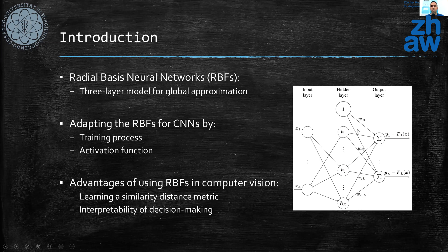Radial basis functions can also be used for regression. In this research, we adopted the training process of the RBFs and also proposed an activation function so that they can be integrated into CNNs. As an advantage, we can learn a similarity distance metric and interpret the decision process of the computer vision models using RBFs by looking at the clusters and distribution of the training and test samples around the clusters.